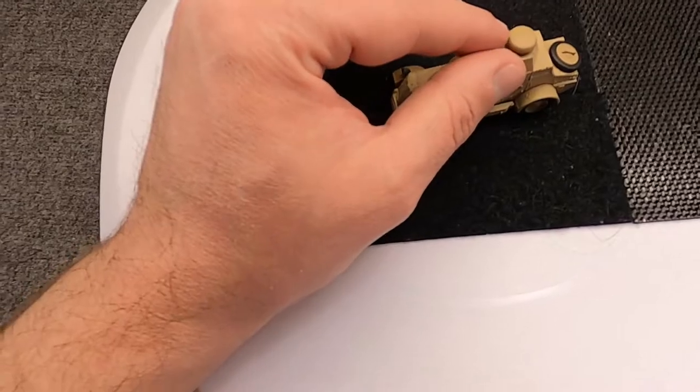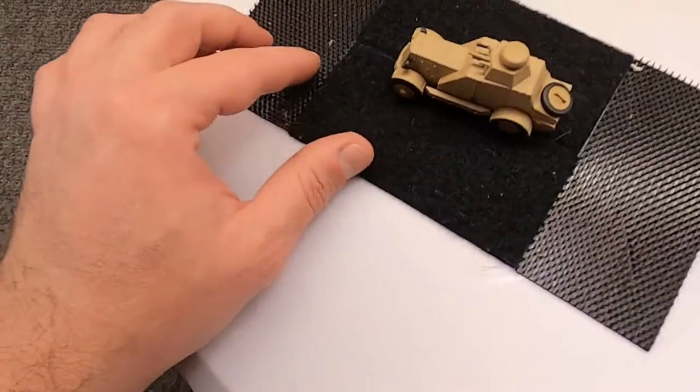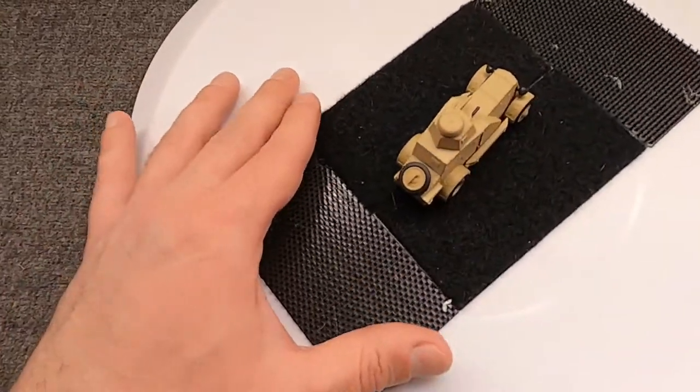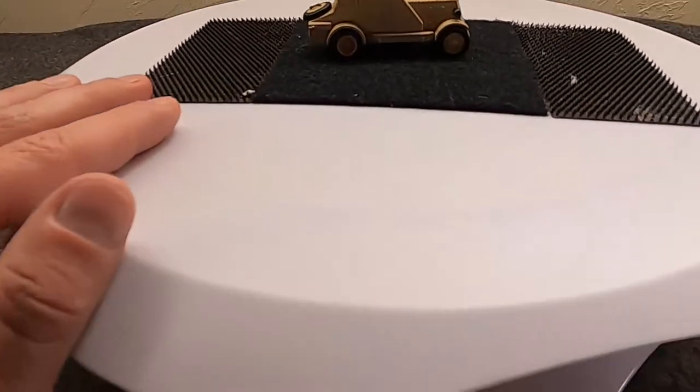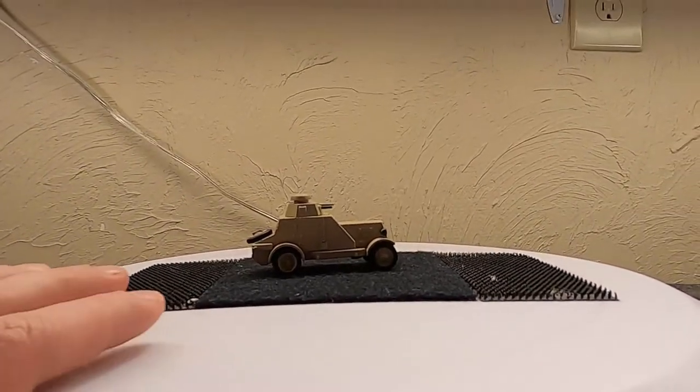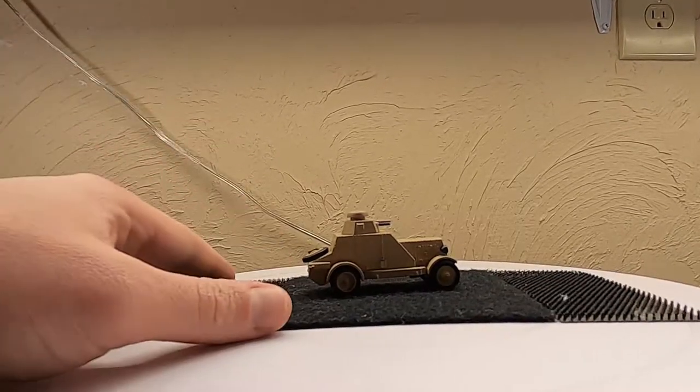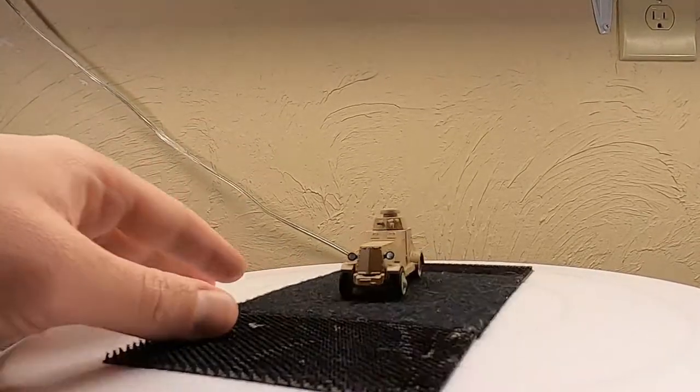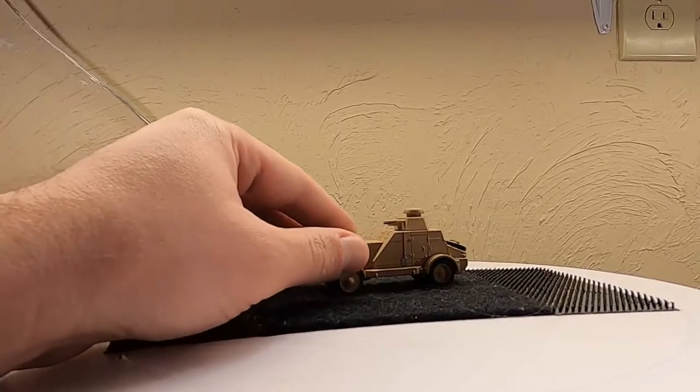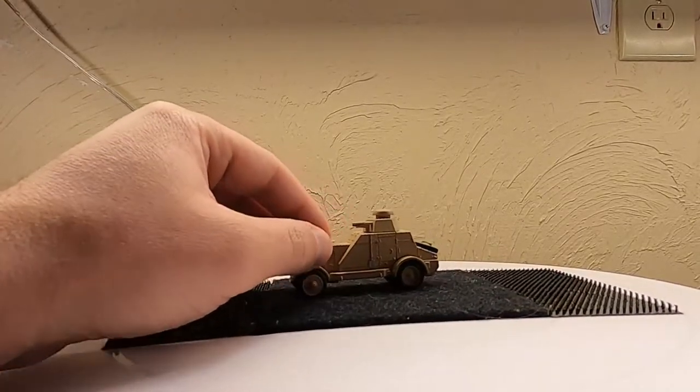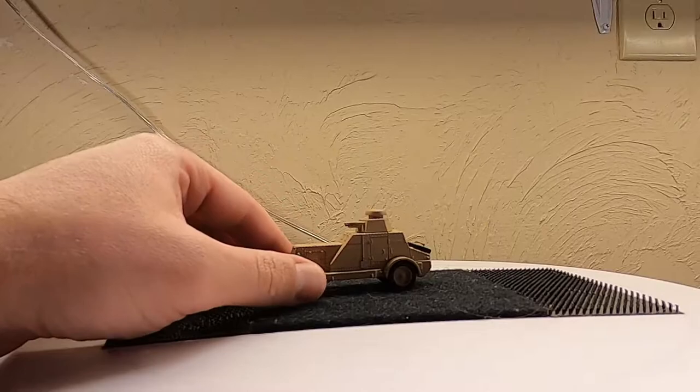And it was pretty heavily armed for its day and time. I mean, a 37mm gun, even though it wasn't super high velocity, it did have a high rate of fire and it was good against infantry. And that's pretty much what this was used for, was infantry support because of the machine gun and whatnot. So it was a starting point, let's say.